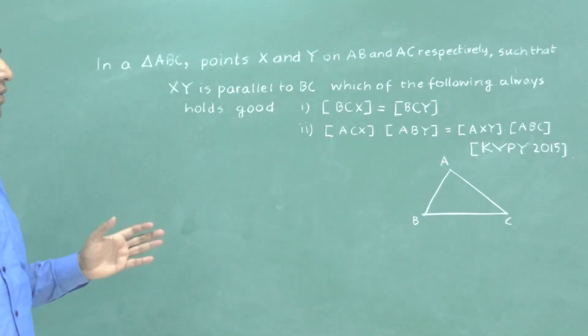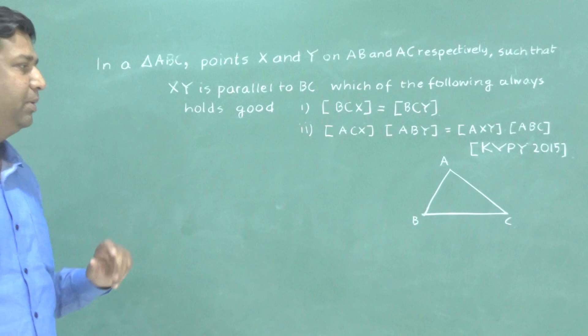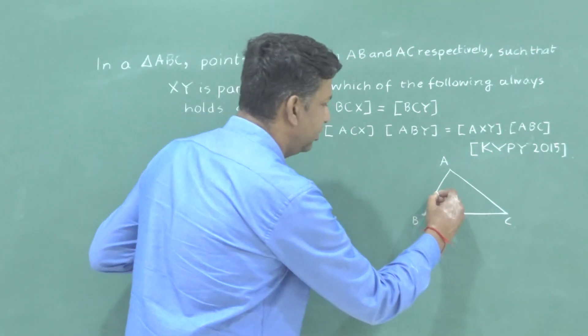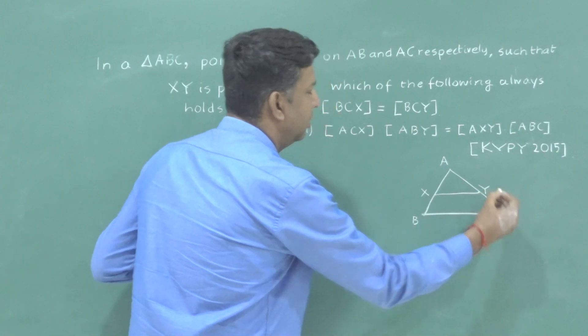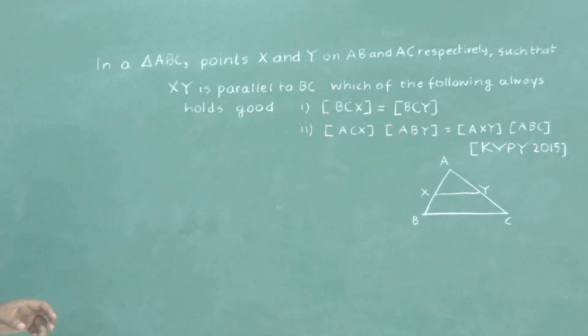And X and Y are points on AB and AC respectively. That's what is given such that XY is parallel to BC. Now, which of the following is true?